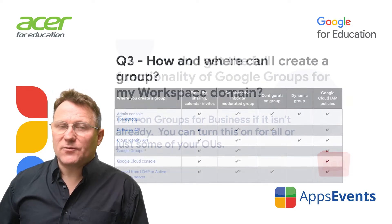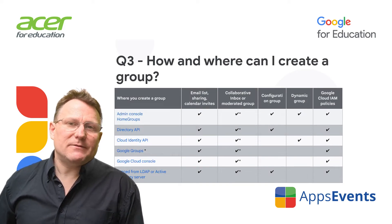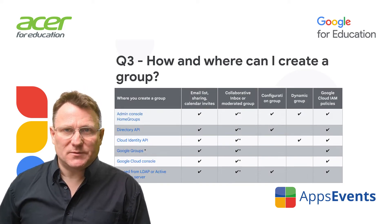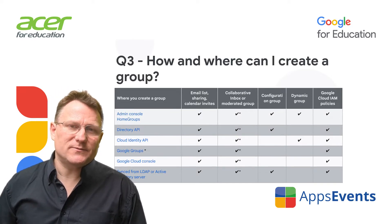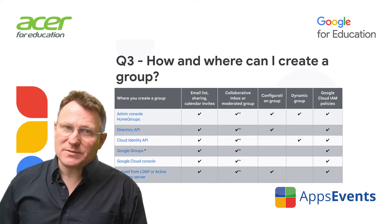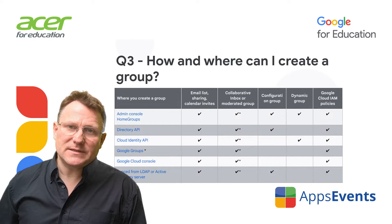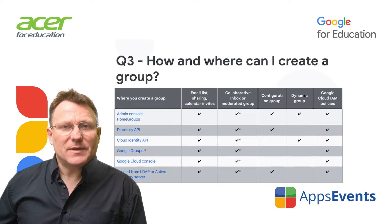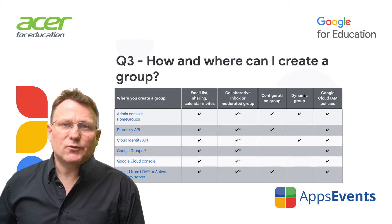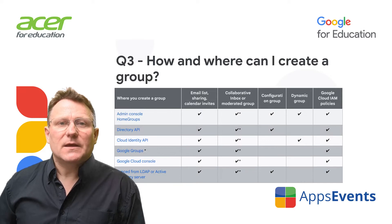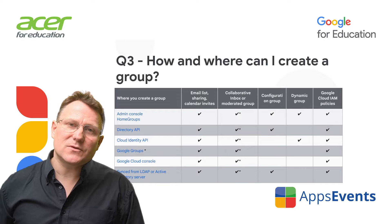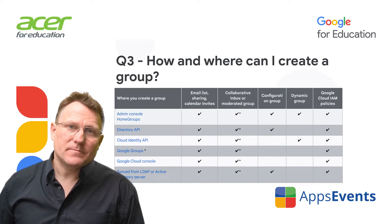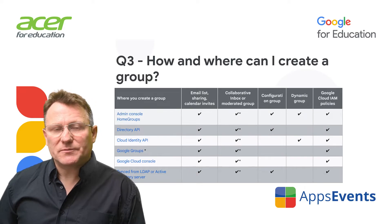How and where can I create a group? There are several ways to create groups for use in Google Workspace. In a few cases, where you create a group might limit what it can be used for. Communication and collaboration groups, mailing lists, and collaborative inboxes can be created in any location. Groups created anywhere can also be used for policies in Google Cloud. Configuration groups and dynamic groups must be created either in the Admin Console or using the API. This table shows where different types of groups can be created.